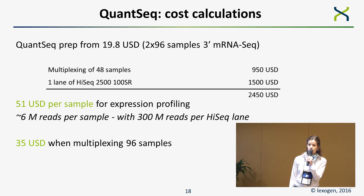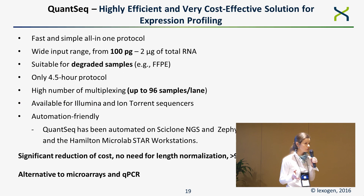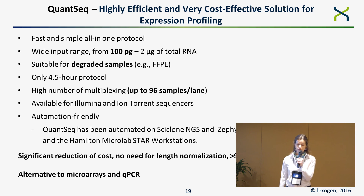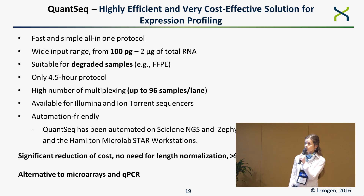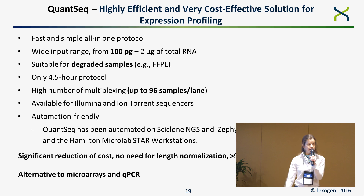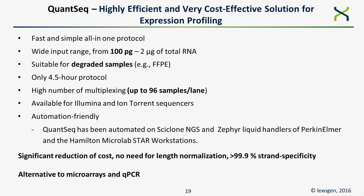This results in a cost of roughly $35 to $50 per sample when multiplexing 96 or 48 samples in one lane of HiSeq 2500 at single-read 100. In summary, QUANseq is a fast and simple all-in-one protocol with a wide input range, working from as little as 100 picograms of total RNA. It is suitable for degraded samples, user-friendly — less than five hours from total RNA to a ready-to-sequence library — supports high multiplexing with barcodes included, is available for Illumina and Ion Torrent sequencers, automation-friendly, with no need for length normalization and very high strand specificity.